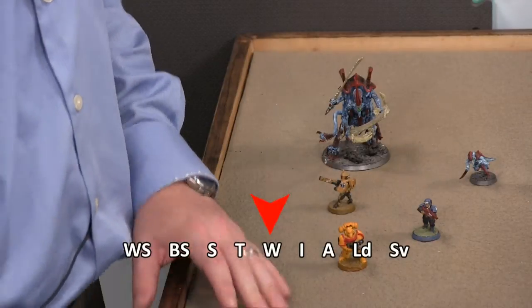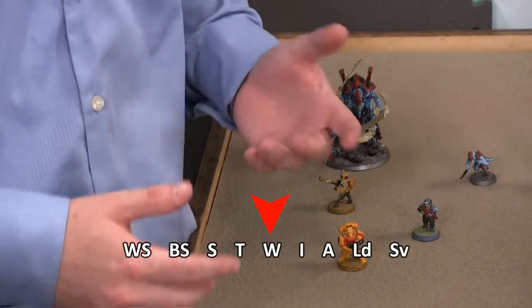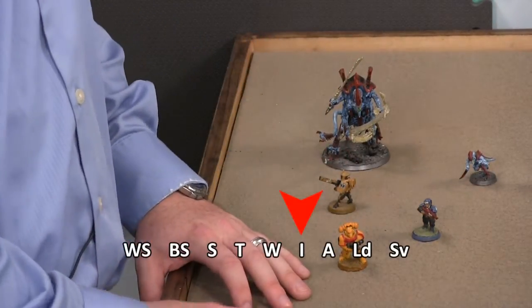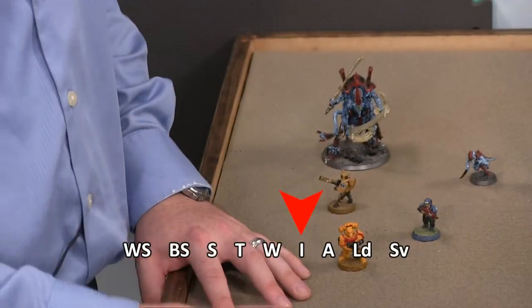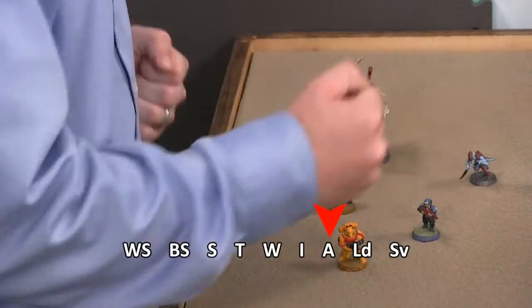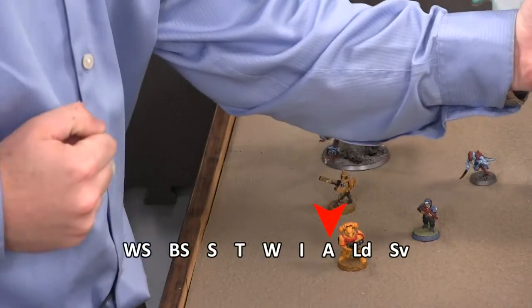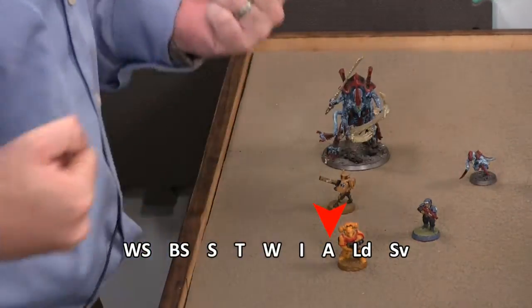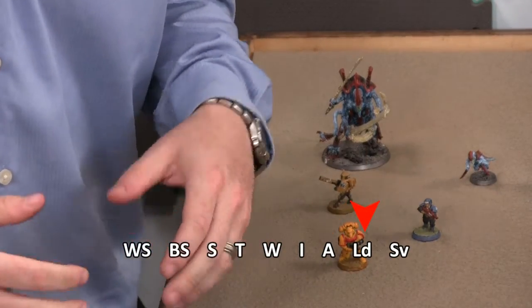Your wounds—does it only take one hit to take you down? Does it take more than one hit to take you down? Your initiative is how smart or how fast you can move. Your attacks, how many times you actually get to hit in close combat. Somebody with a lot of attacks is really, really fast. Somebody with not a lot of attacks is maybe really strong but really slow.